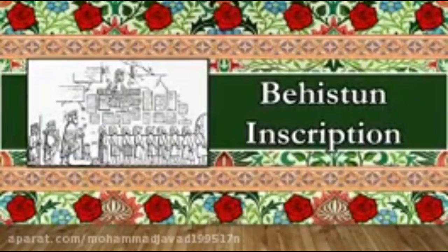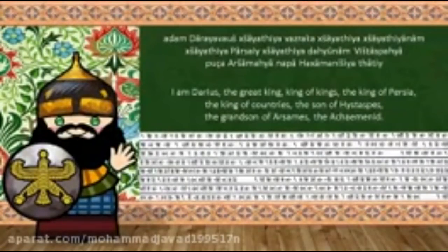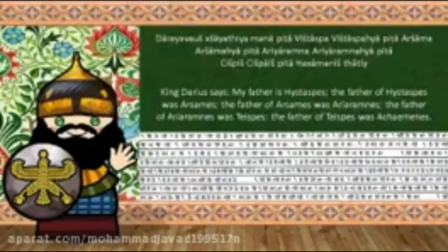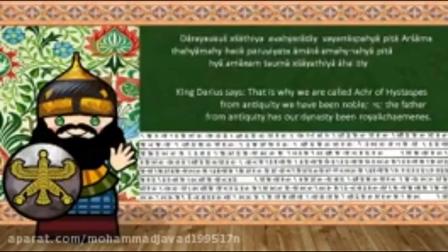The Bisotun (Dehistoon) Inscription: Adam Darya Wawsh Kshayithya Wazraka Kshayithya Kshayithya Anam Kshayithya Parasay Kshayithya Dahyunam Ishtaspahya Pusha Arshamahya Napaha Khaman Ishshatya. Darya Wawsh Kshayithya Mana Pita Ushtaspa, Ishtaspahya Pita Arshamahya, Pita Aryaaramna, Pita Aryaaramna Pita Chishpish, Chishpish Pita Hachamanish. Saatya Darya.